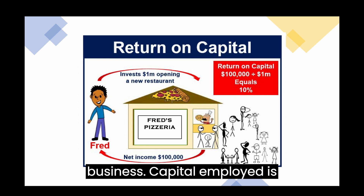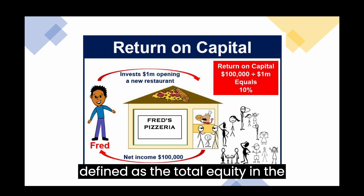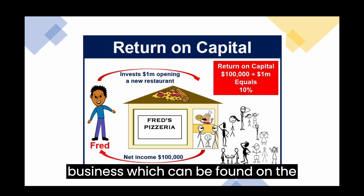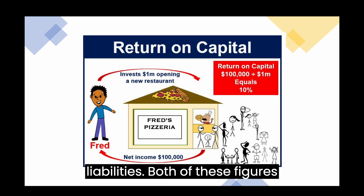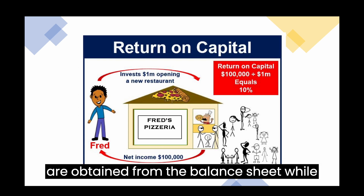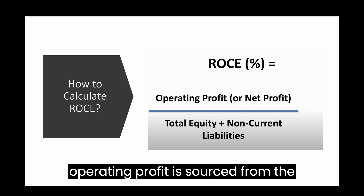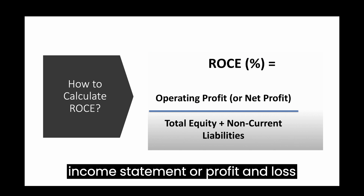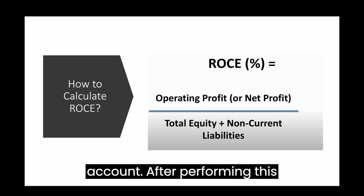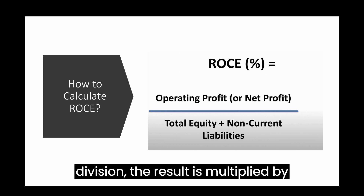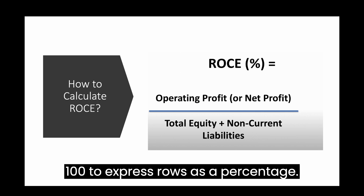Capital employed is defined as the total equity in the business, which can be found on the balance sheet, plus the non-current liabilities. Both of these figures are obtained from the balance sheet, while operating profit is sourced from the income statement or profit and loss account. After performing this division, the result is multiplied by 100 to express ROCE as a percentage.